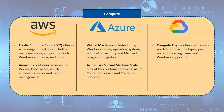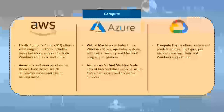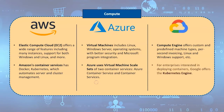Azure, unlike AWS, uses virtual machine scale sets for container services. Azure Container Services is based on Kubernetes, and Container Service uses Docker Hub and Azure Container Registry for management. For enterprises interested in deploying containers, Google offers the Kubernetes Engine. It's also worth noting that Google was significantly involved in the Kubernetes project, providing extensive knowledge in this field.